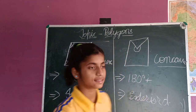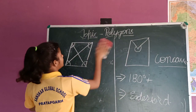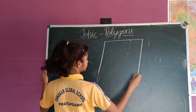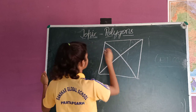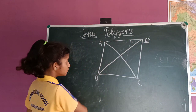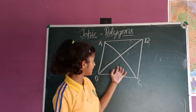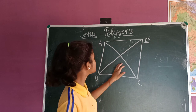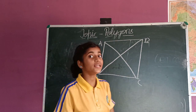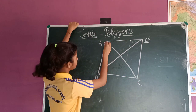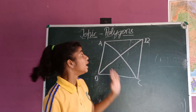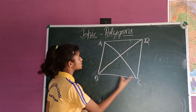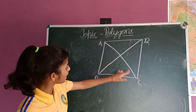Now let's move toward learning about diagonals. A line segment that joins the non-consecutive vertices of a shape is known as a diagonal. For example, if we have a shape with vertices A, B, C, D — joining A and B would not give a diagonal because they are consecutive vertices. But if we join A and C, skipping B, those are non-consecutive vertices, and AC is a diagonal.